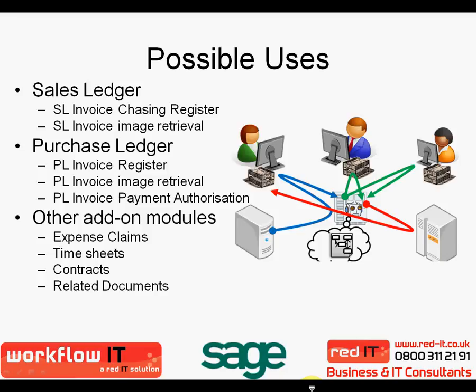It has many uses. On the sales side it could be used to keep details of credit control, chasing, or to retrieve copies of invoices quickly. On the purchase ledger side it could be used as a purchase ledger invoice register which can then be used to workflow that particular invoice around the organisation. Invoices can be retrieved quickly and it could also be used for a payment authorisation system where, for example, a purchase order processing system is being held outside of Sage.